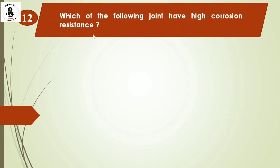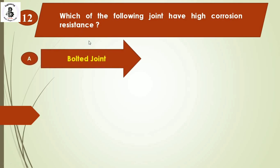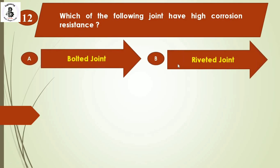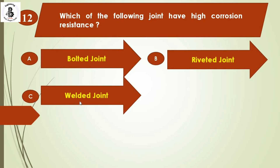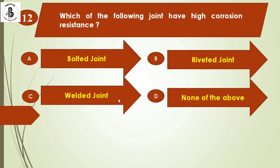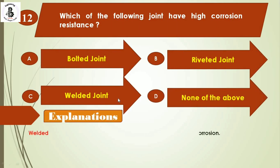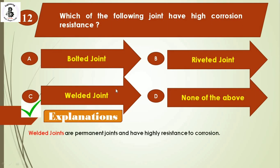The next question: which of the following joints has high corrosion resistance? Option A: bolted joint, Option B: riveted joint, Option C: welded joint, Option D: none of the above. Welded joints are permanent joints and also have high resistance to corrosion. The right answer is Option C: welded joint.